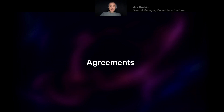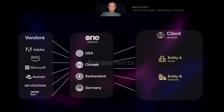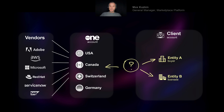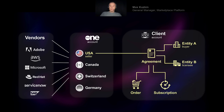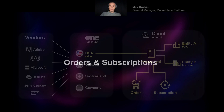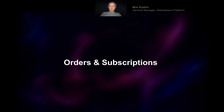This is how we structure that relationship: buyers procure software, licensees consume it. This brings us to a very important object called an agreement. An agreement in our platform is the way to link the world of SoftwareOne with the world of the client — it links the seller on the SoftwareOne side with the buyer and licensee on the client side. An agreement is the context in which transactions occur and where orders are actually placed.